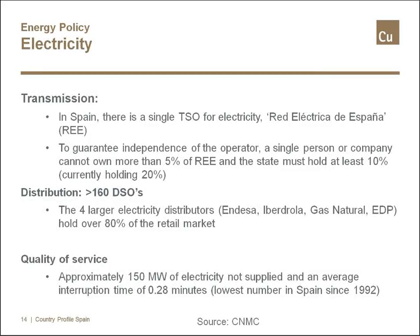On other features of the electricity landscape: at the transmission level, there is a single transmission system operator — Red Eléctrica de España. No company or person can own more than 5% of this company, and the state must hold at least 10% — currently it holds 20% — to guarantee independence.